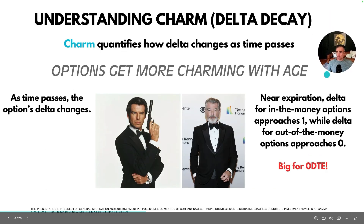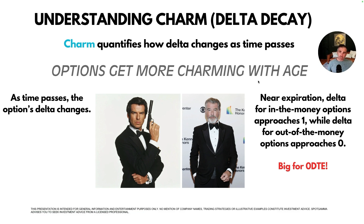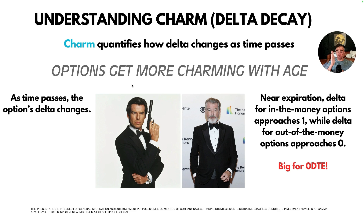Charm quantifies how Delta changes as time passes. A fun way to think about this: options get more charming with age — meaning with 30 days to expiration, Charm is not a big impact, but when you get to a zero DTE option, it matters a lot. The reason is the time decay aspect: an option is going to be in the money or out of the money at expiration, and that can determine whether you're making money. As we get closer to expiration, with just an hour or two left, you can have a pretty good shot at knowing whether the option will expire in or out of the money.